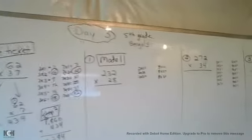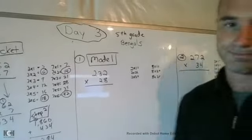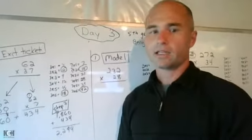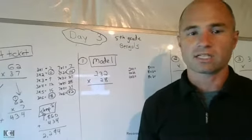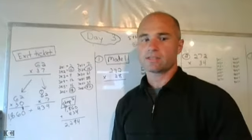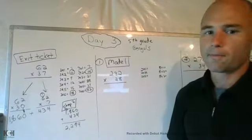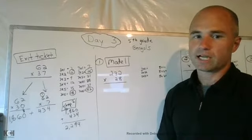Today we're going to move on to three digit times two digit. How do you do that? Same thing, same strategy. We're still going to expand the second number, but now we have a three digit up top.